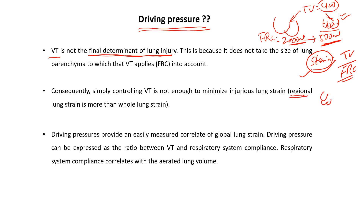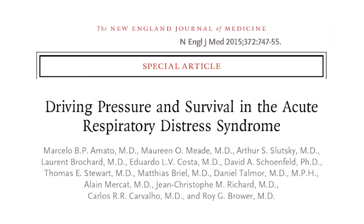Some alveoli are aerated and some non-aerated — due to the high strain pattern there is more shear stress and risk of atelectrauma. Driving pressure helps measure global lung strain because it incorporates respiratory system compliance, which mainly correlates with aerated lung volume. The article by Amato et al., 'Driving Pressure and Survival in the Acute Respiratory Distress Syndrome,' showed driving pressure is an independent risk factor for mortality and can be used for prognostication.